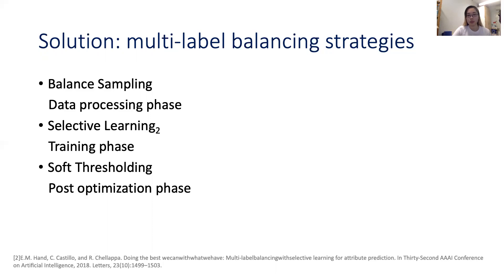First, in the data processing phase, we use balanced sampling — this method randomly samples data from shuffled data without replacement. In the training phase, we use selective learning strategies to adjust the labels in a batch-wise manner. Since we can calculate the whole distribution of labels beforehand, for each label in each batch, if the batch distribution equals the ground truth distribution, selective learning does nothing. If the label is over-represented, selective learning will weight the negative samples by the ratio of positive to negative samples, so that the negative samples effectively match the balanced target distribution, and vice versa.